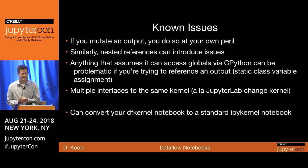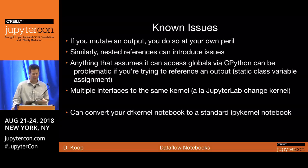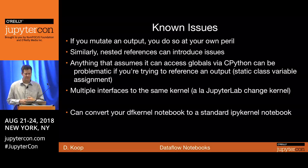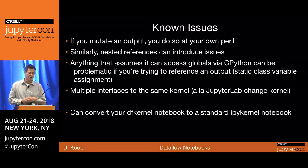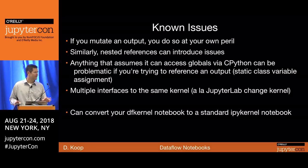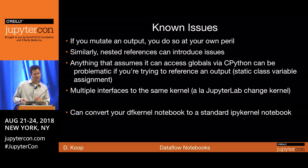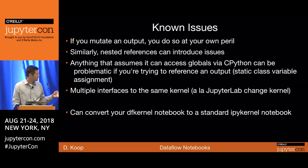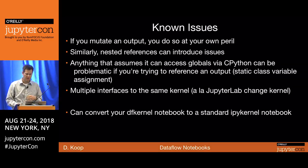There are some known issues. If you mutate an output — modifying the internals of an object output from another cell — you do that at your own peril. Nested references can introduce issues. Overriding the namespace directly via CPython globals is problematic, as are static class variable assignments. Multiple interfaces to the same kernel is something we haven't thought about. However, you can convert a dataflow kernel notebook to a standard IPy kernel notebook — we sort things in the right order so you get the run-all top-down execution style.